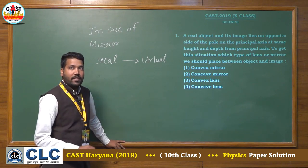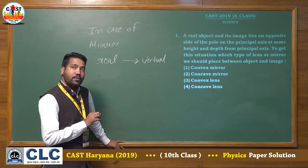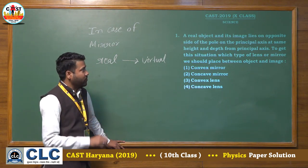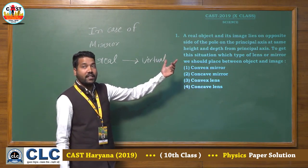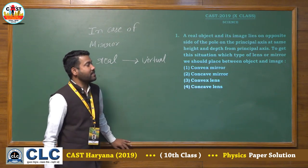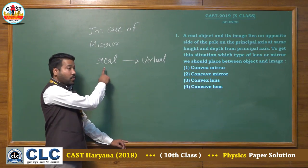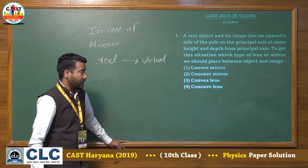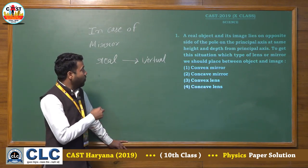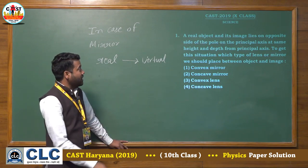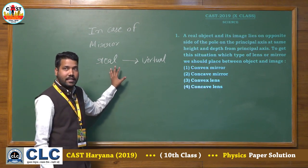That means, if the object is at some height from the principal axis, the image will also be at that same height or greater. But the given condition says the image is at the same height and depth — meaning the image is inverted — so concave mirror cannot be the answer. A convex mirror forms a virtual image of a real object, and that image is also erect, so convex mirror is also not the answer.